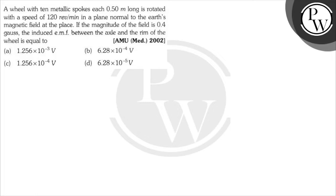A wheel with 10 metallic spokes, each 0.50m long, is rotated with a speed of 120 revolutions per minute in a plane normal to the Earth's magnetic field. The magnitude of the field is 0.4 Gauss. The induced EMF between the axle and the rim of the wheel will be: